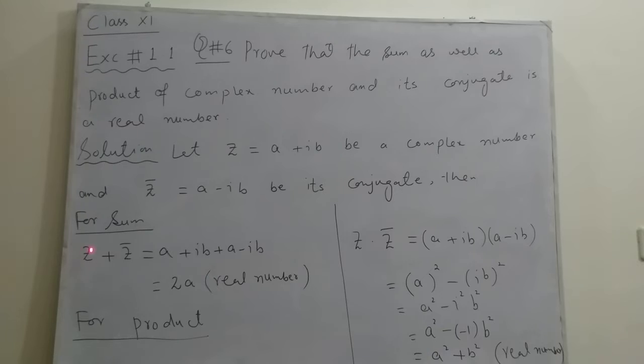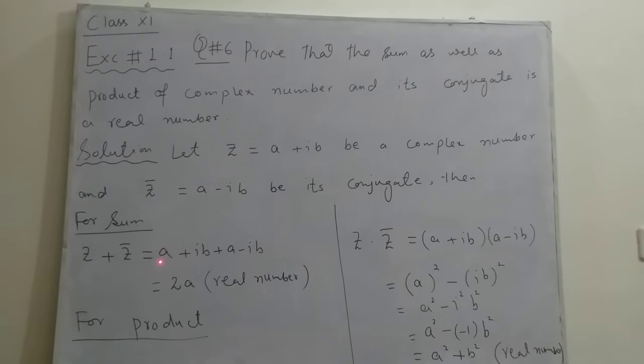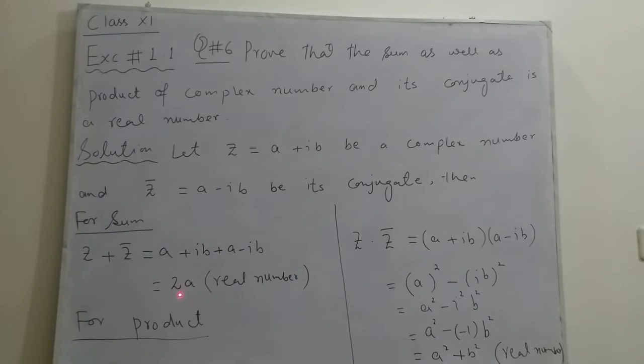So for sum, we will take sum of complex number z and its conjugate z bar. Putting value of z plus putting value of z bar, plus iota b and minus iota b will be cancelled out and we will get a plus a which equals 2a, which is a real number because it does not contain any imaginary part or iota term.